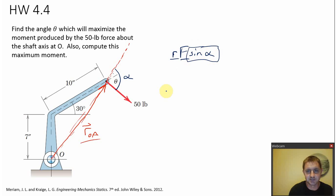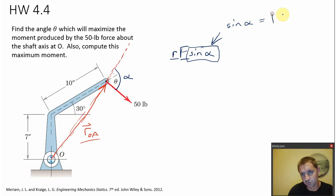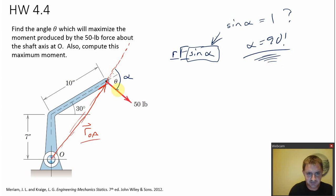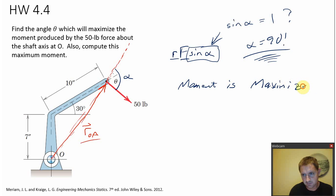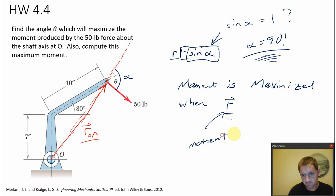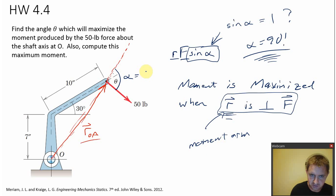How do I maximize this? I want the sine of alpha to be maximum. When is sine of alpha equal to 1? When alpha is 90 degrees. So the moment is maximized when the moment arm R is perpendicular to the force vector F. That's what we want — when alpha equals 90 degrees.